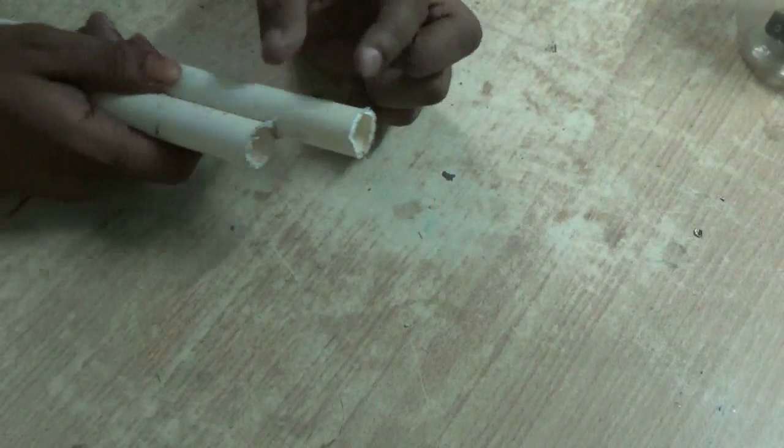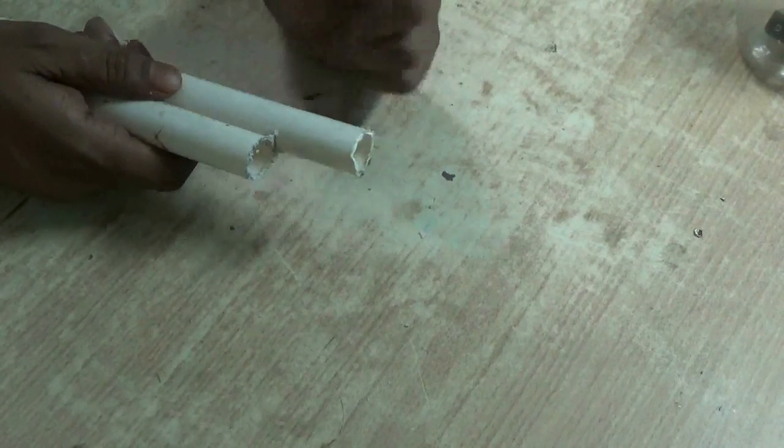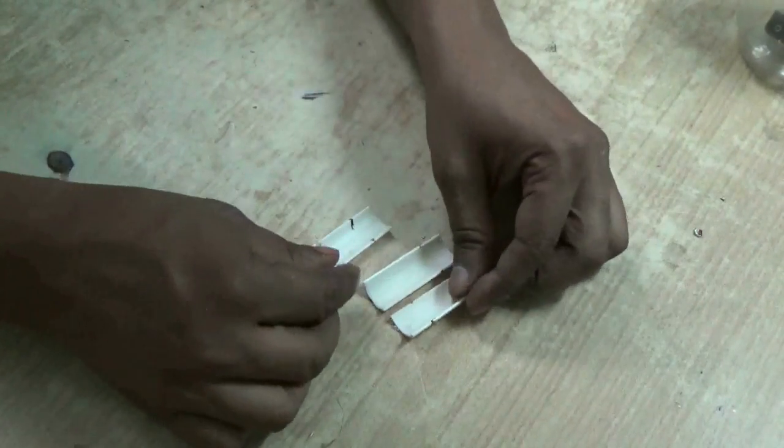Now you need a piece of pipe. This is an electrical pipe, around two inches. Cut it into three pieces. You will get three pieces like this.